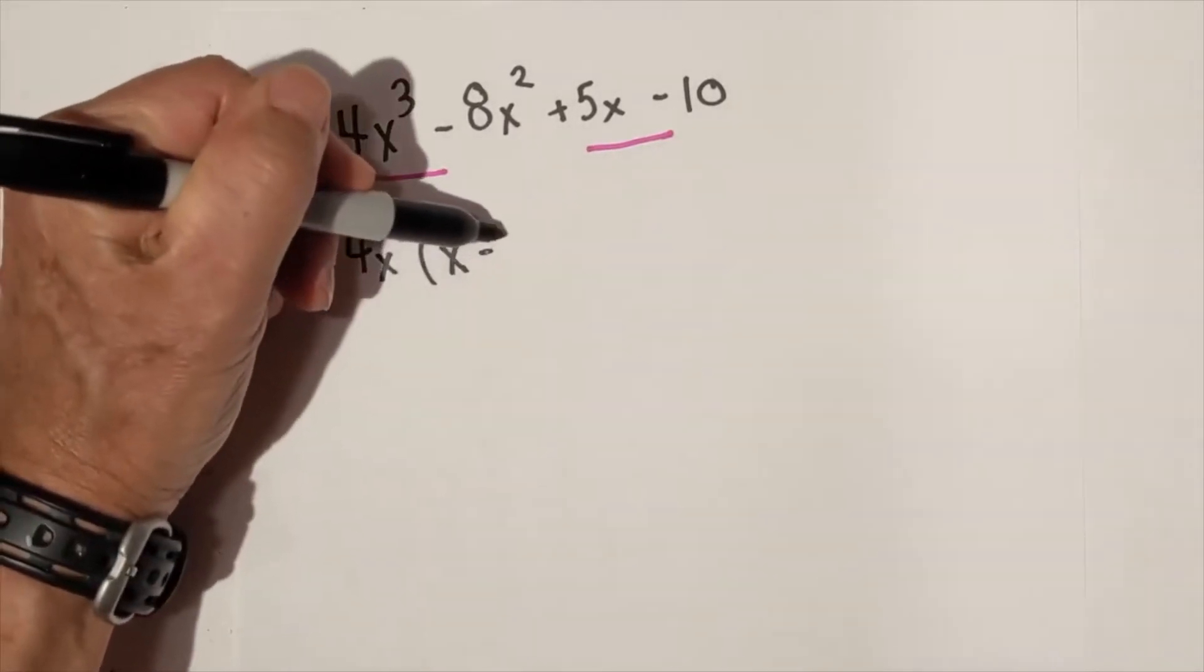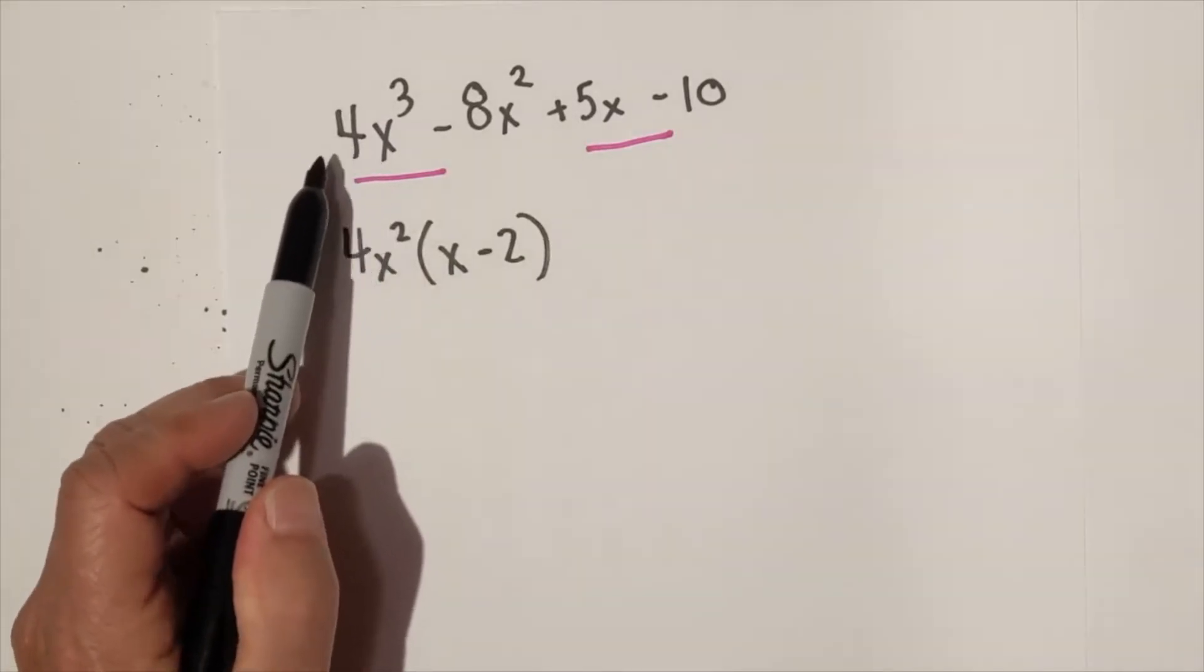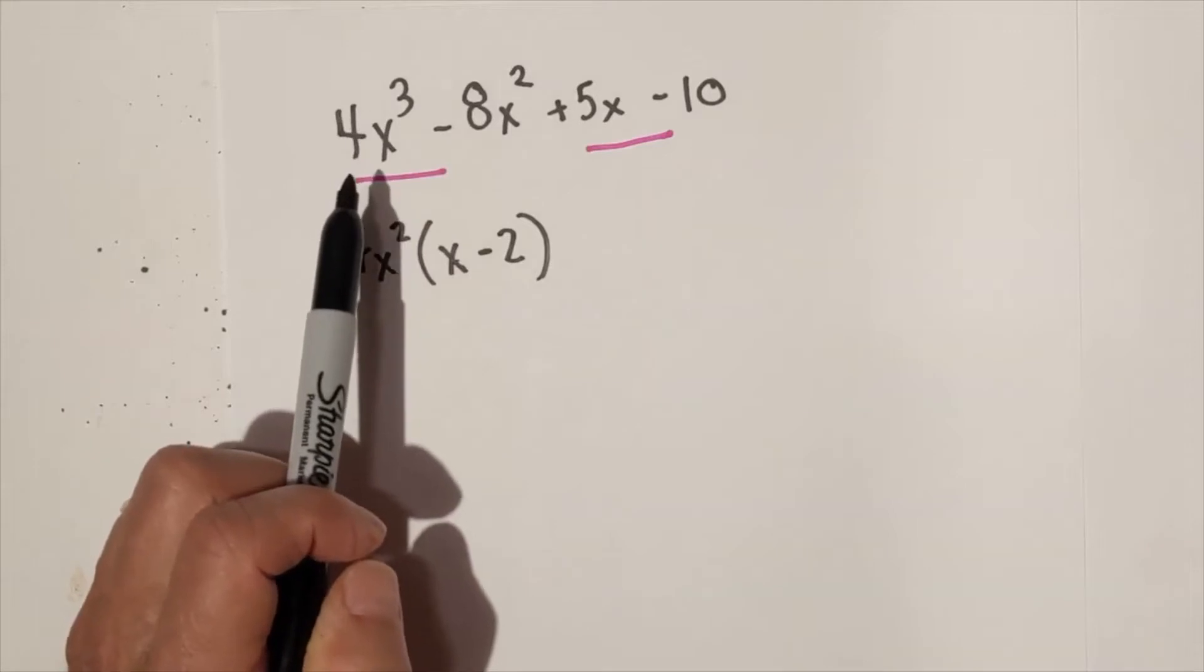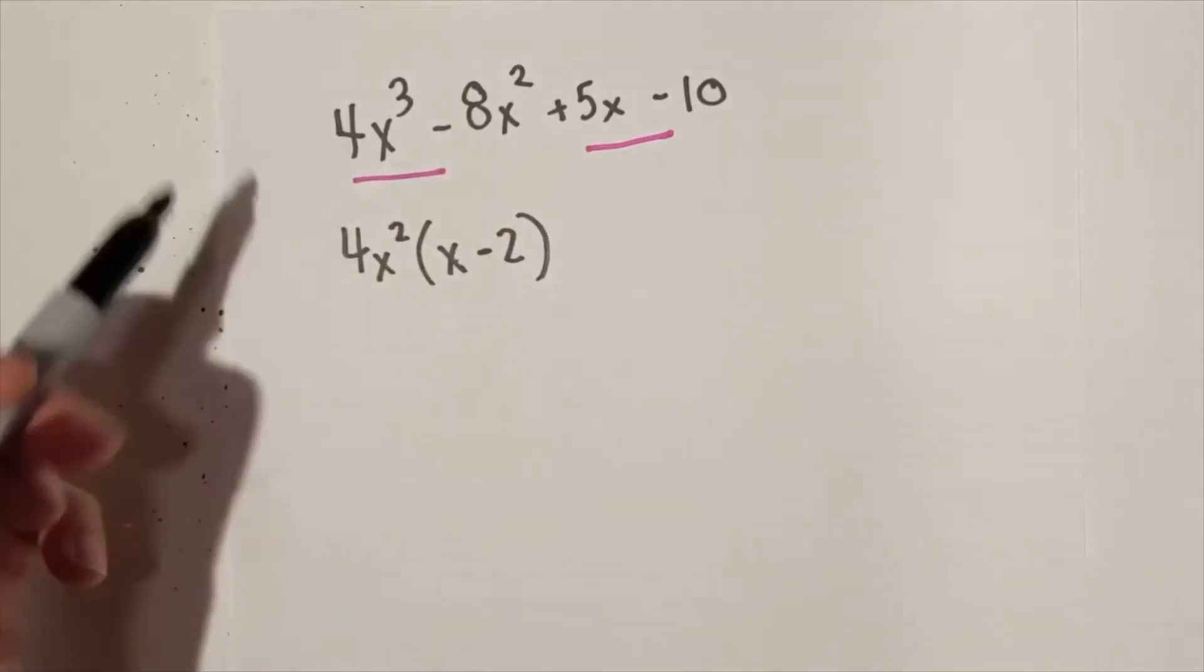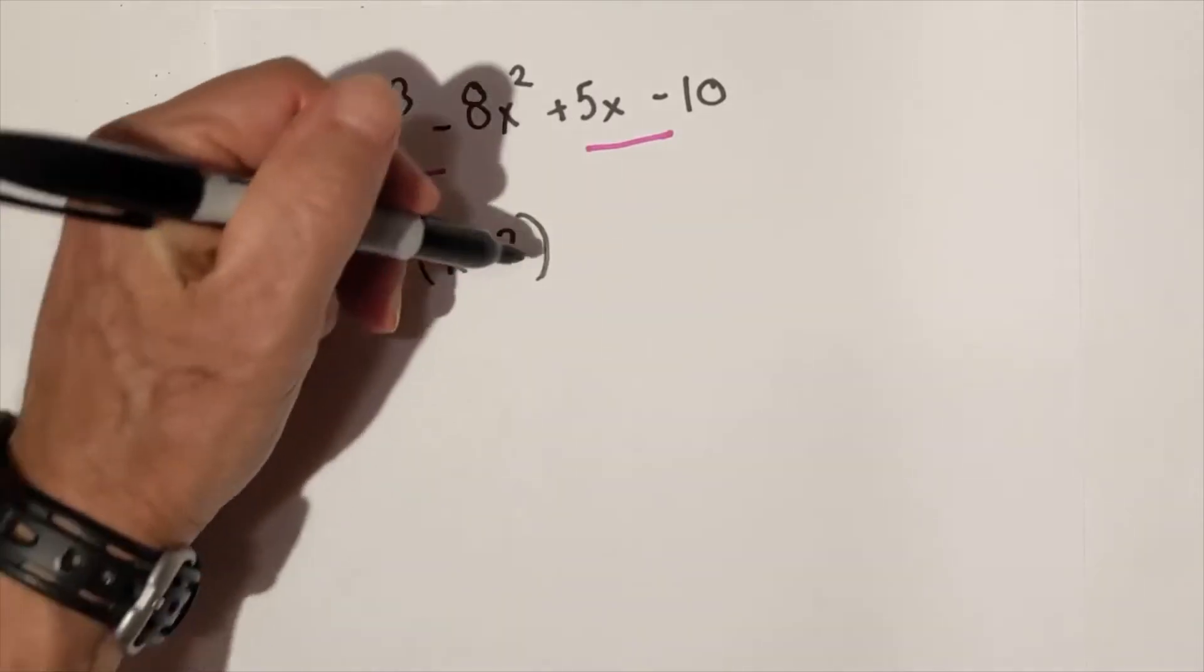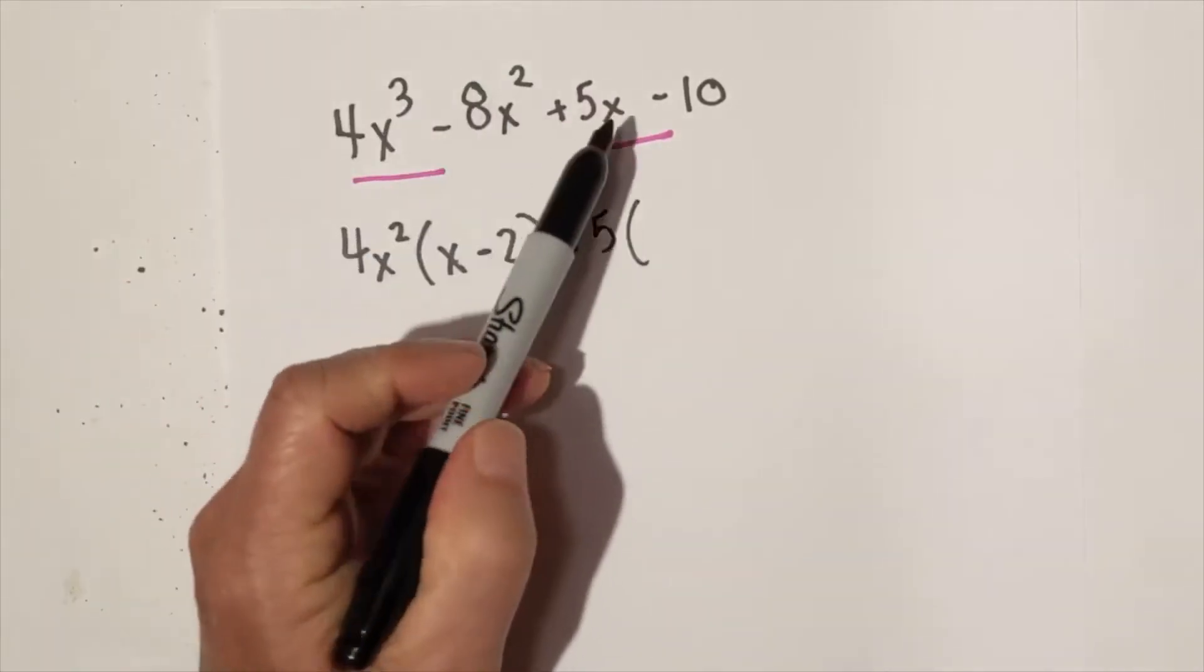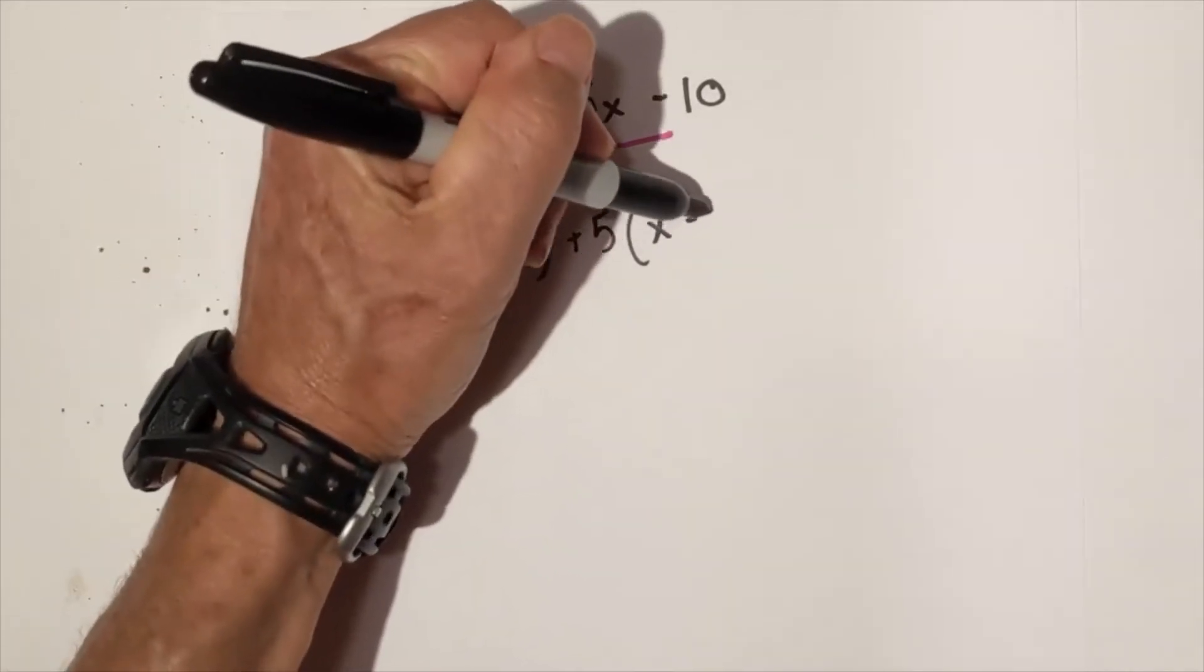Now we go ahead and find the greatest common factor in this one, and it is 5. So we go with x minus 2.